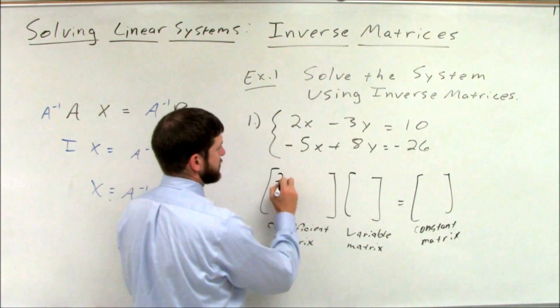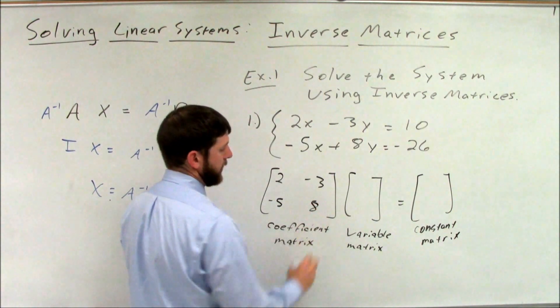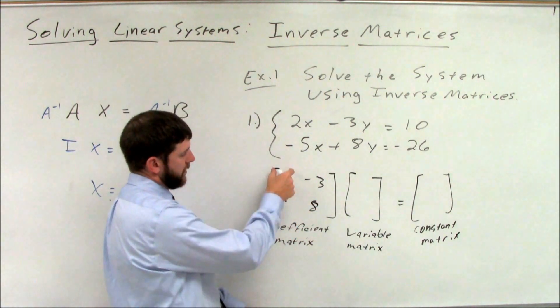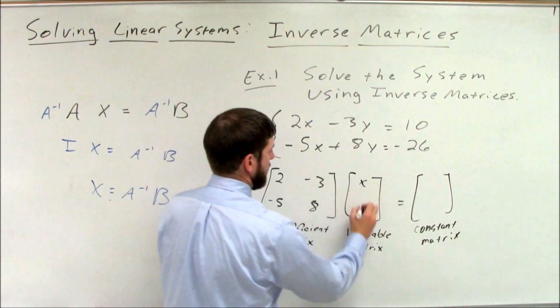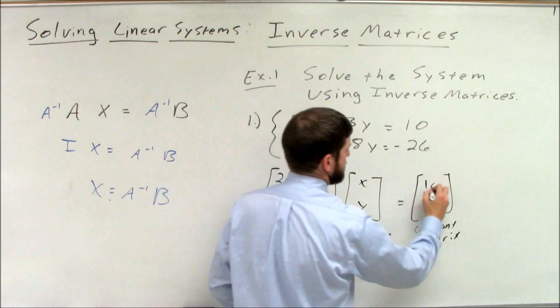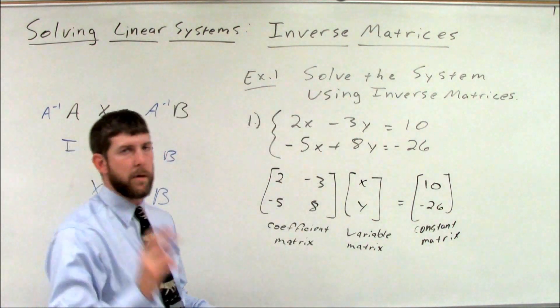So we take our coefficients 2, negative 3, negative 5, and 8, being very order specific. X's are in the first column, y's are in the second column, and then x over y, and 10, and negative 26. Well, let's just do a quick check of our matrix multiplication. Row one times column one.